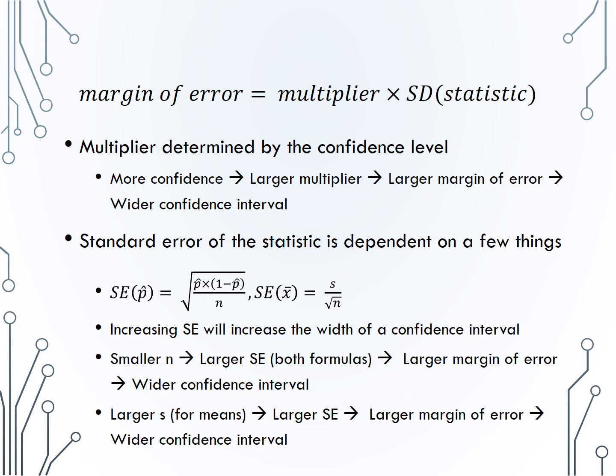A larger multiplier will lead to a larger margin of error, which in turn gives us a wider confidence interval.